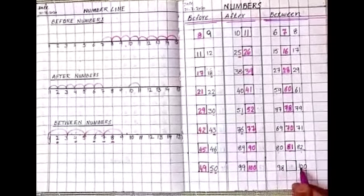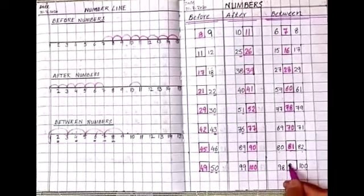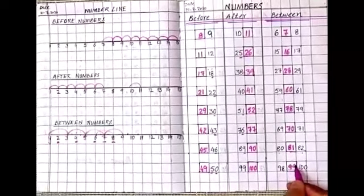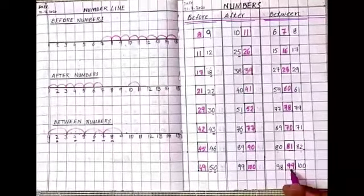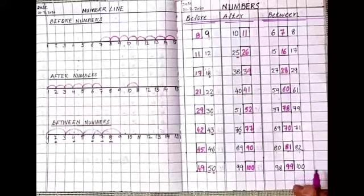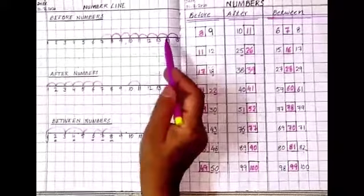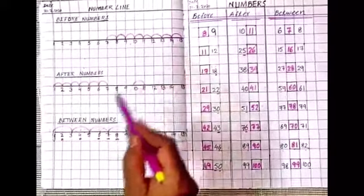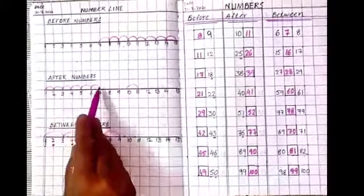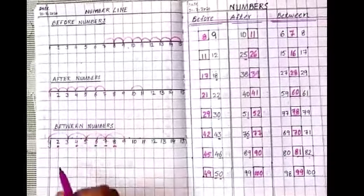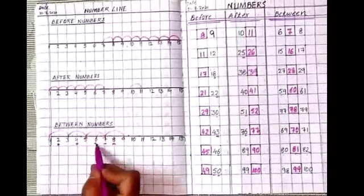98, 98 and 100. The between number is 99. 98, 99, 100. So this is all very easy for you. The concept you can do before numbers on a number line, and after numbers, forward counting. And between number, the middle numbers you have to see.